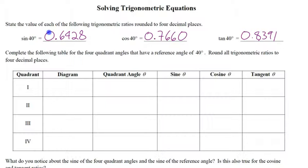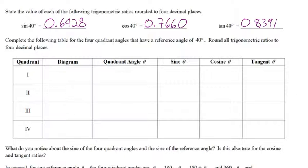So radians — when you learn what a radian is, they make more sense as to why they are what they are. Complete the following table for the four quadrant angles that have a reference angle of 40 degrees. In quadrant 1, a reference angle of 40 degrees will be here, so we'll just call that 40 degrees. The quadrant angle — or what I call the rotation angle — is 40 degrees.